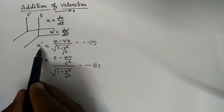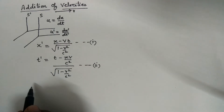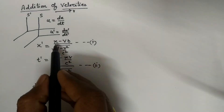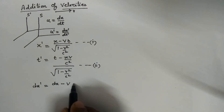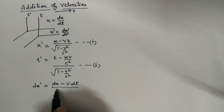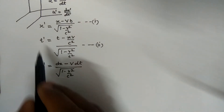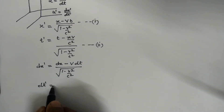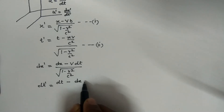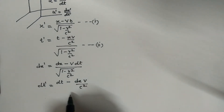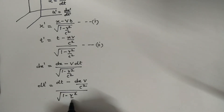Now differentiate equation number 1, and it becomes: dx-dash equals dx minus V dt, upon under root 1 minus V-square upon C-square, since V and C are constants. Now differentiate equation number 2: dt-dash equals dt minus dx times V upon C-square, upon under root 1 minus V-square upon C-square.